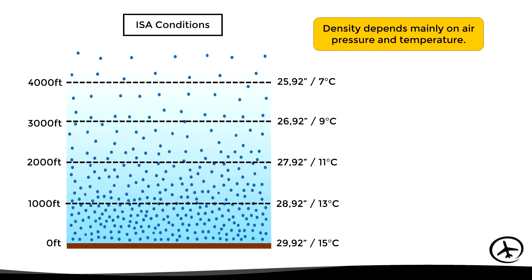Suppose that the combination of 29.92 inches and 15 degrees results in a fictitious density of 12. At 1,000 feet, 28.92 and 13 degrees results in a density of 10. At 2,000 feet a density of 8, at 3,000 feet a density of 6, and at 4,000 feet a density of 4.